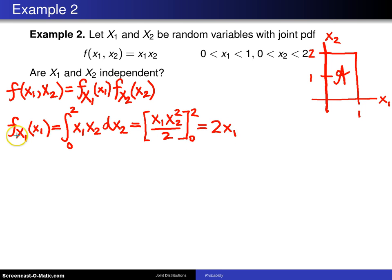So this is 2x1. This is the marginal for x1, and x1 is defined between 0 and 1. That is the marginal distribution for x1.